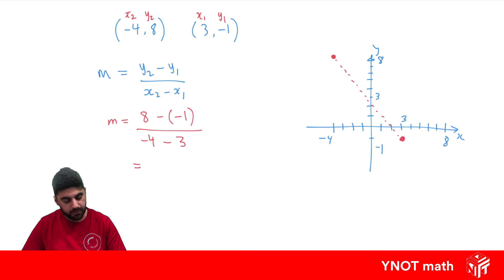So 8 minus minus 1 will be 8 plus 1, which is 9. And minus 4 minus 3 is minus 7. And that's our gradient. We just tidy this up by putting the minus outside the fraction. So we get minus 9 over 7 for the gradient, and we get the negative value as expected because the line is sloping that way.